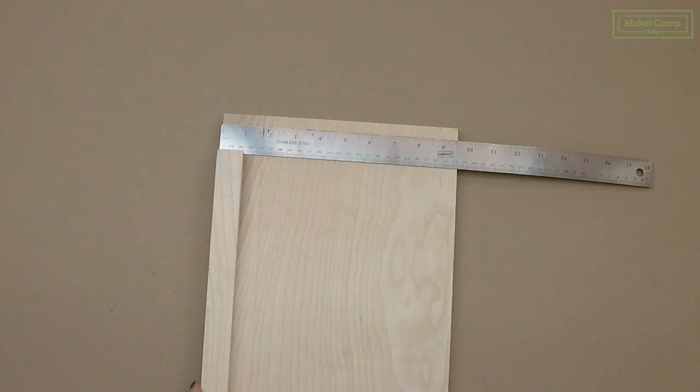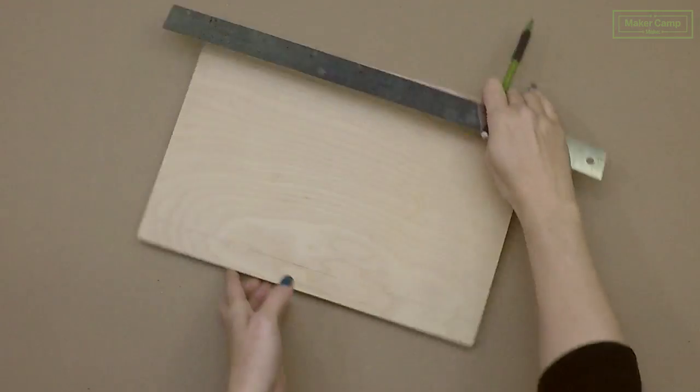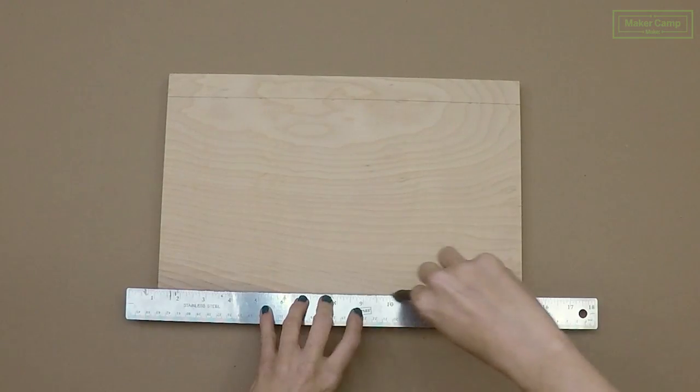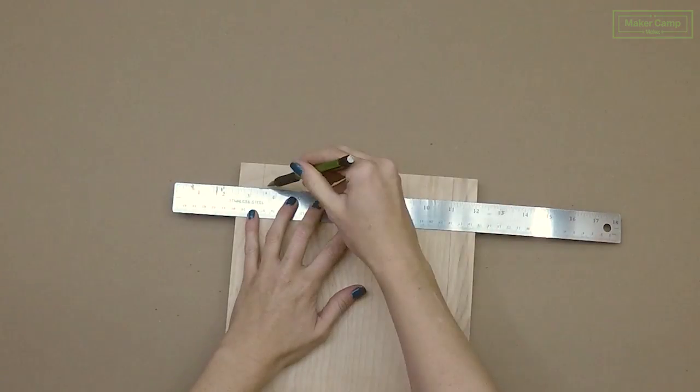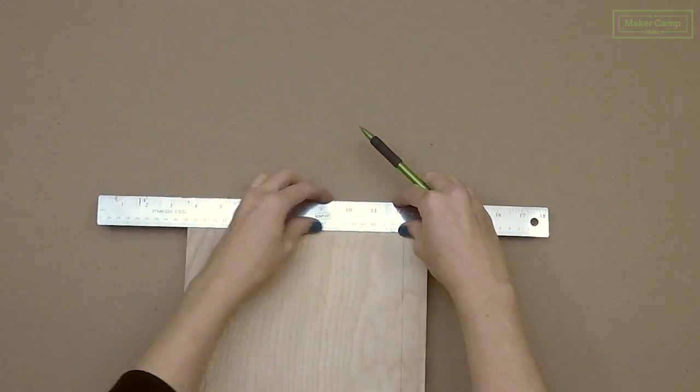First mark the width of your bumper on the side of your main platform. Ours is an inch wide. We're going to use a pencil for this marking so that when we paint it it won't show through. Now mark the tops and the bottom of your board. We want to leave about an inch and a half on the top and the bottom.